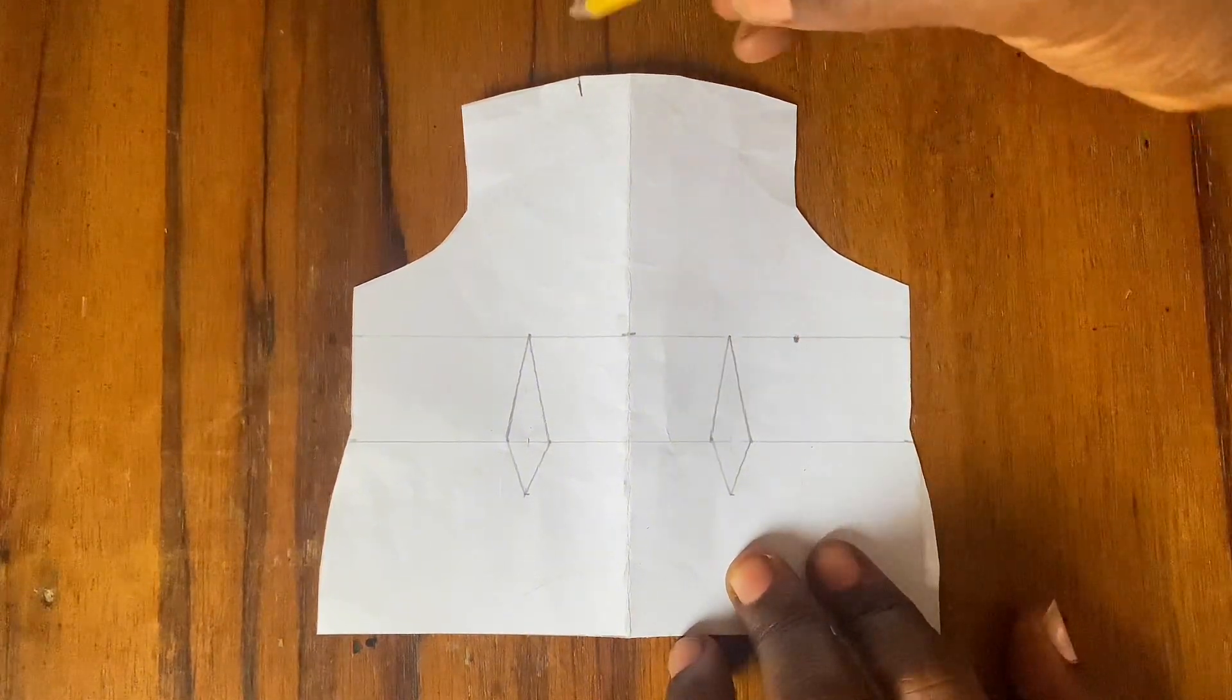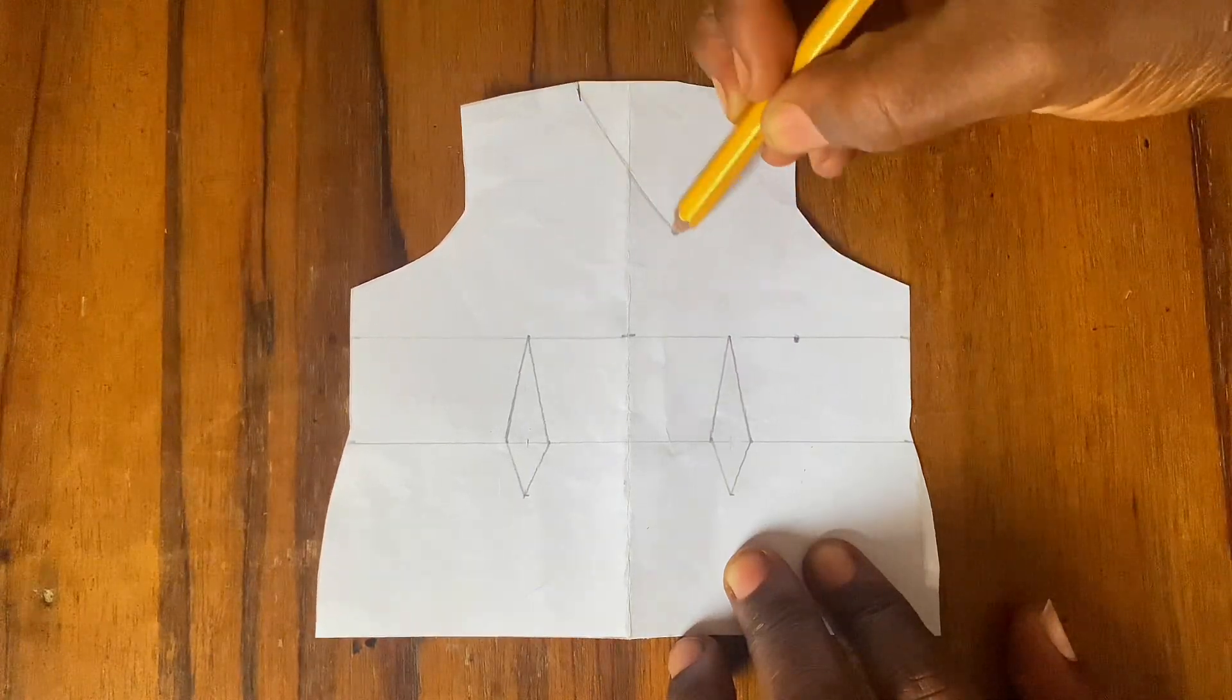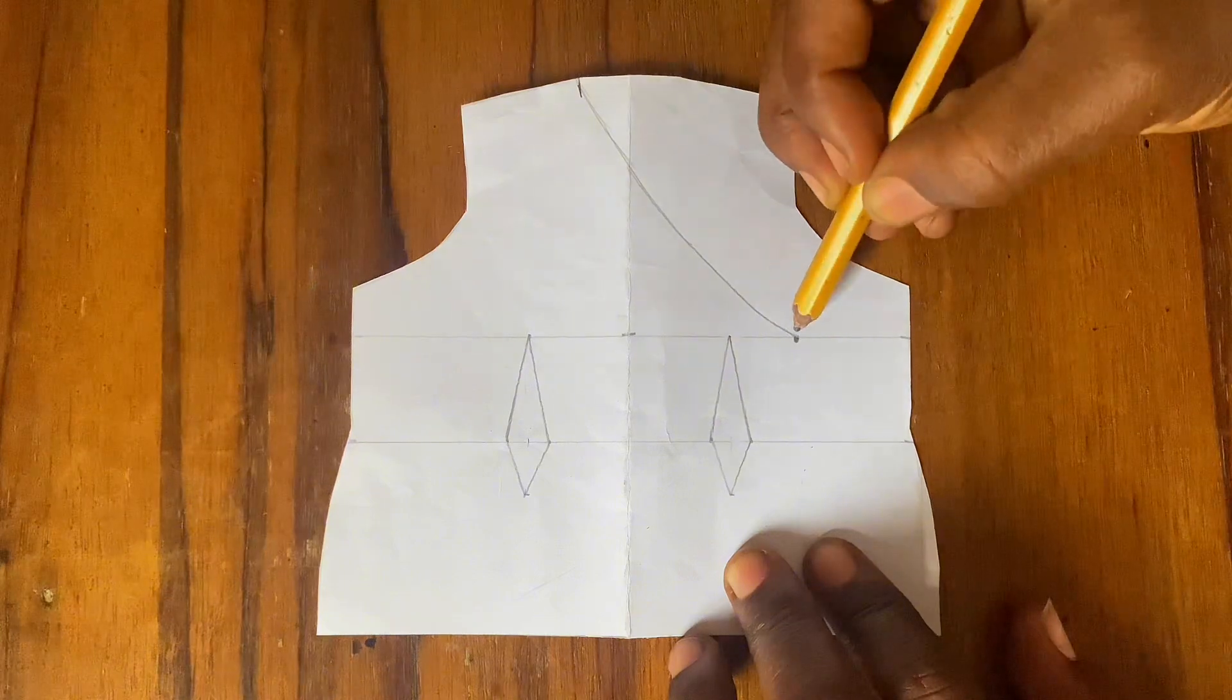Then using a curve from this part here, you go on and join this like this.